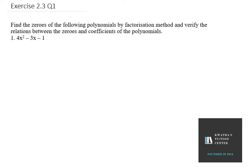Hello everyone, let's start with exercise 2.3 question number 1, NCERT example. It says find the zeros of the following polynomials by factorization method. We need to factorize the term 4x² - 3x - 1.